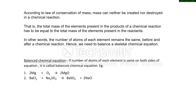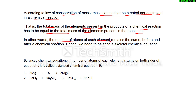In Class 9 you learned about the law of conservation of mass: mass can neither be created nor destroyed in a chemical reaction. Therefore, the total mass of elements in the products must equal the total mass of elements in the reactants, meaning the number of atoms of each element remains the same before and after a chemical reaction. That is why we need to balance a skeletal chemical equation to get a balanced chemical equation.